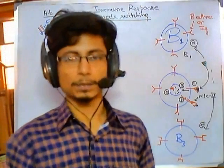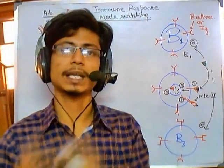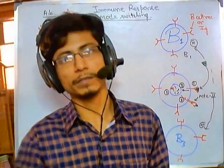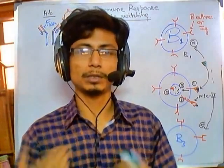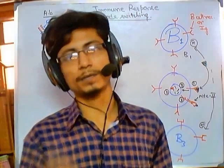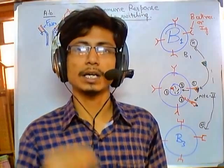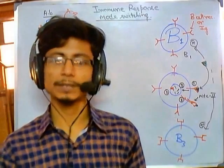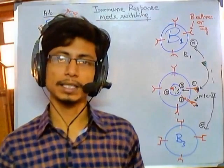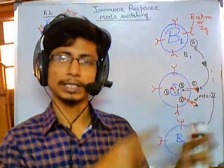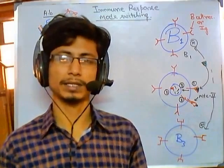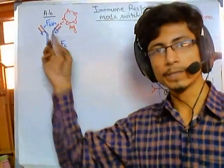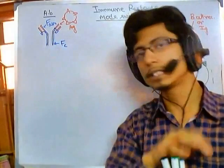Immune response can be of two different types: one is humoral and another is cell-mediated. Whenever an antigen or foreign pathogen enters your body, your immune system can respond using either of two systems — cell-mediated immunity or antibody/humoral-mediated immunity involving complement systems.